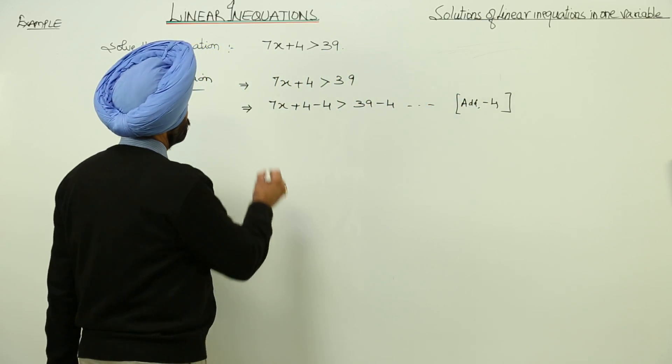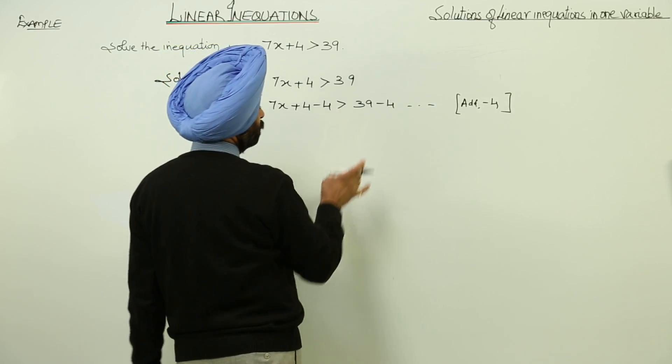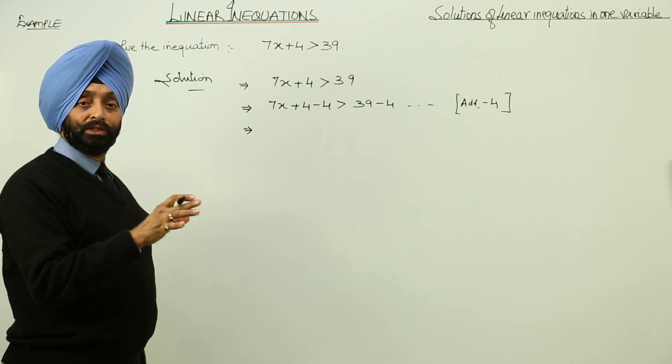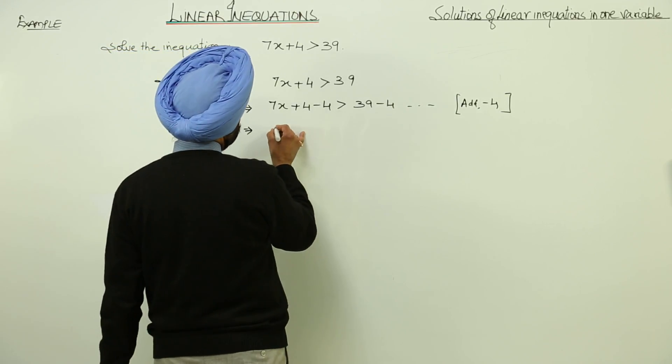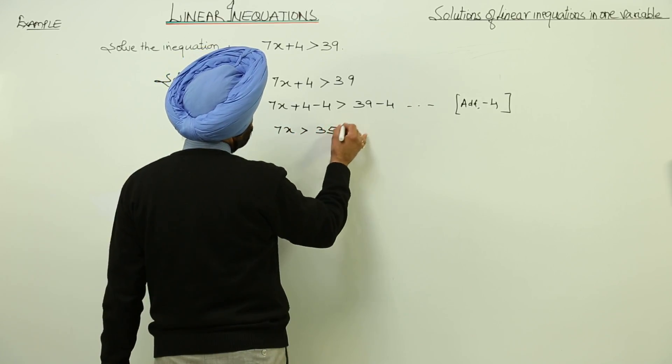So now when we are writing negative 4 and negative 4 both sides, it means the inequation is still in the balance form. So this becomes 7x is greater than 35.